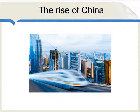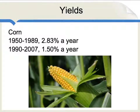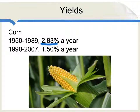If growing wealth were the only cause of rising food prices, things would still overall be okay, because there would be more food being consumed. Unfortunately, there's a second culprit, and that is a slowdown in productivity growth in global agriculture. We can see this in the numbers for the major crops. Consider corn: between 1950 and 1989, the yield for corn went up by an average of 2.83% a year. From 1990 to 2007, the rate went up by only 1.5% a year — much slower.